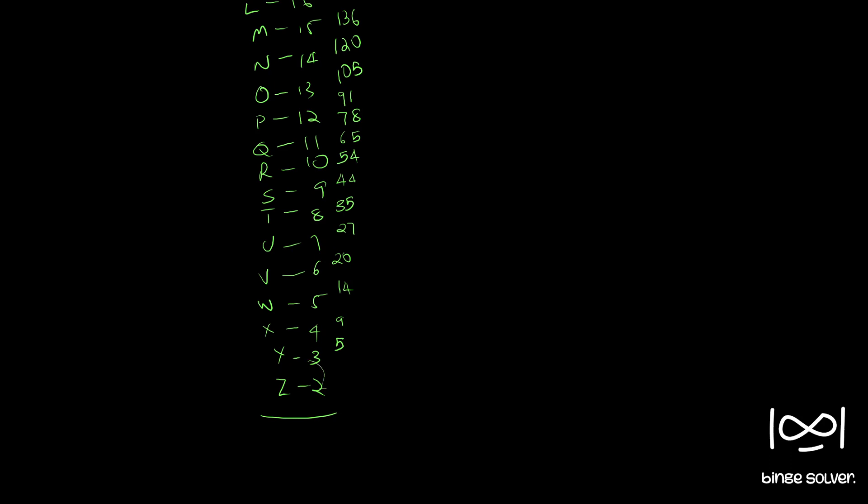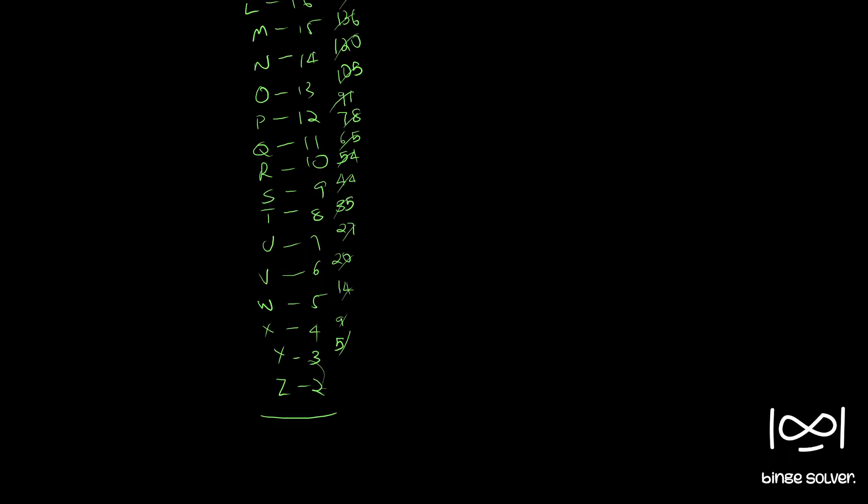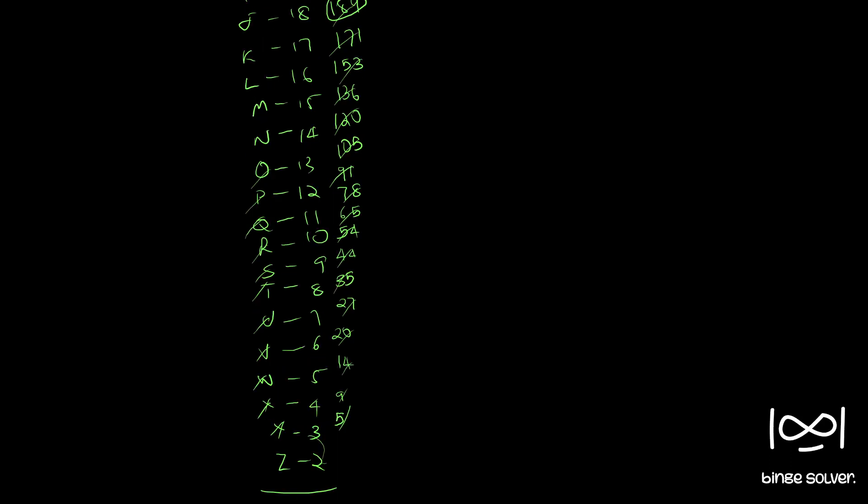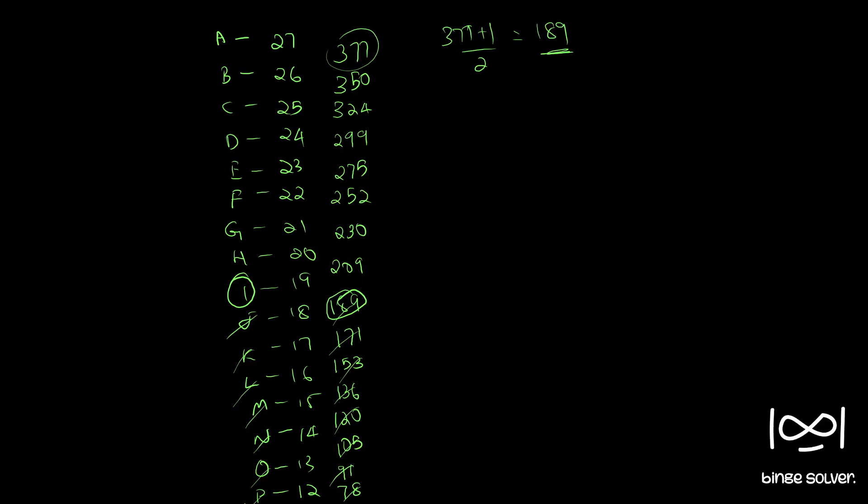189 is, let me just see. 2 plus 3 is 5, so 1, 2, 3, 4, 5, 6, 7, 8, 9, 10, 11, 12, 13, 14, 15, 16, 17th number. So from here, 17th number will be 1, 2, 3, 4, 5, 6, 7, 8, 9, 10, 11, 12, 13, 14, 15, 16, 17th number, so I. So the reason I had to do that was I didn't write it neatly. If you write it neatly, you will clearly see 189 will be I. So quickly you can say I is the middle number.